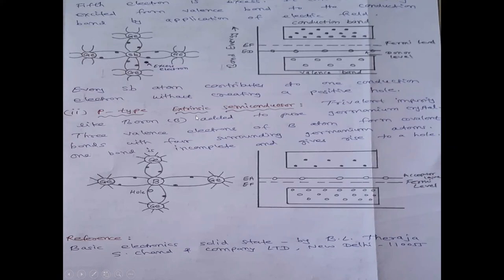Now, second P-type extrinsic semiconductor. Now, if we add trivalent impurity like boron to pure germanium crystal. If we add this boron to this germanium crystal pure. Now, three valence electrons of boron atom form covalent bonds with four surrounding germanium atoms. Now, friends, see in the diagram. This is boron atom and germanium atoms are surrounding this boron atom. Now, there are three valence electrons of this boron. So, three valence electrons form bonds with three germanium atoms. But, fourth bond is incomplete. This incomplete bond gives rise to one hole.